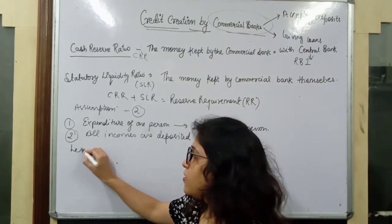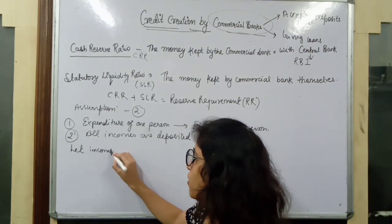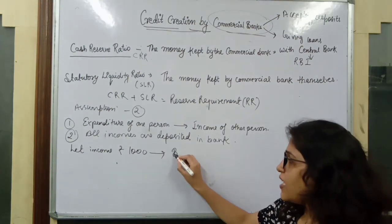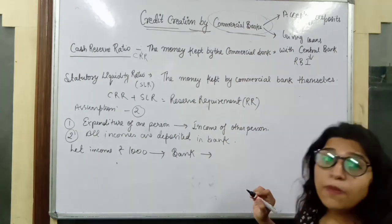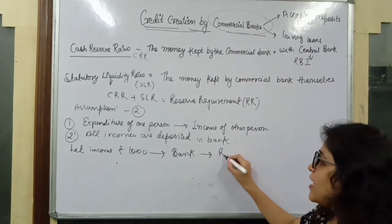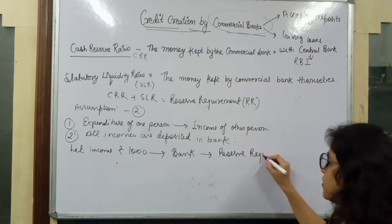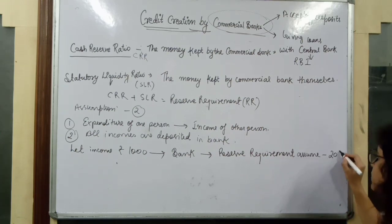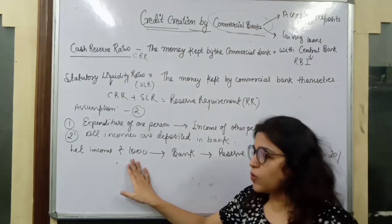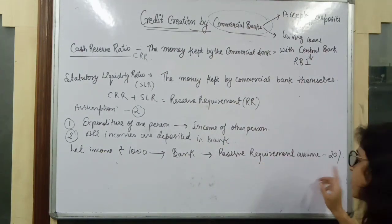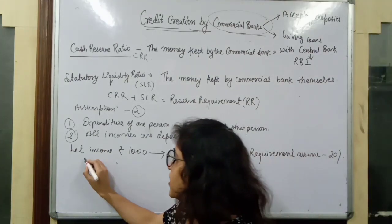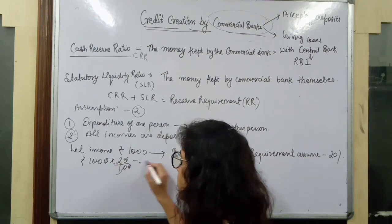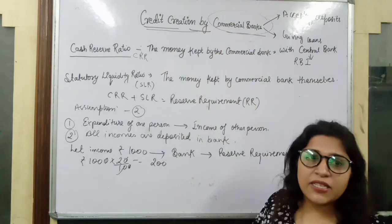Let's assume that there is an initial income of 1,000 rupees, which is deposited in the bank. We will assume that the reserve requirement is 20%.